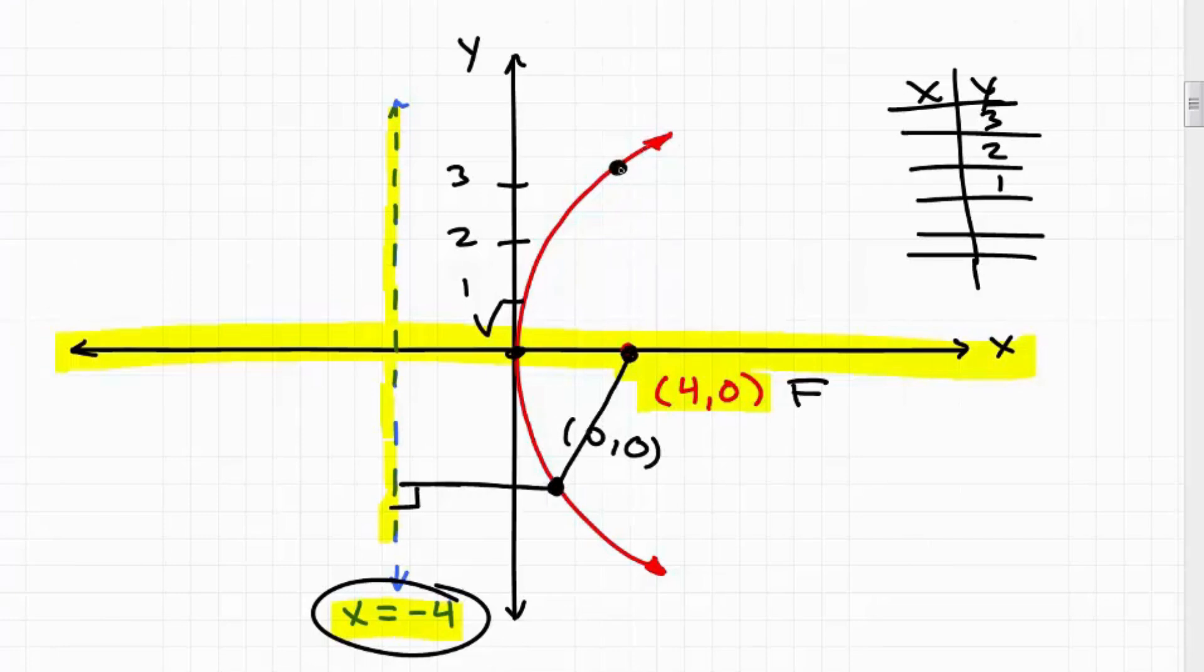So this distance is the same as this distance on any point that's on the parabola. So let's say this point here. So if we go from the focus to this point, it's going to be the same distance from that point on the parabola down to the directrix. And just kind of eyeballing this, it looks like these lines...